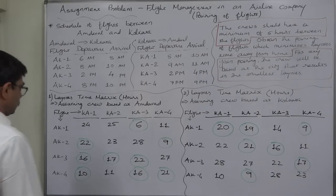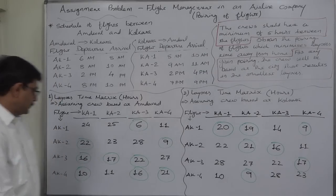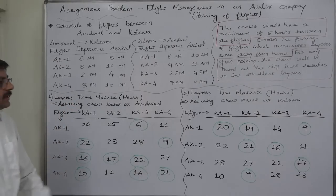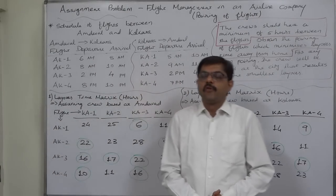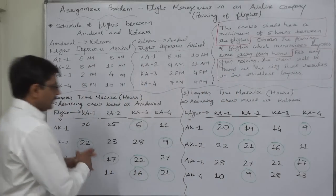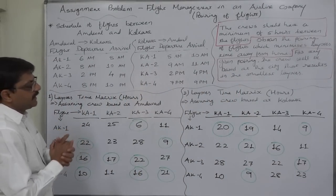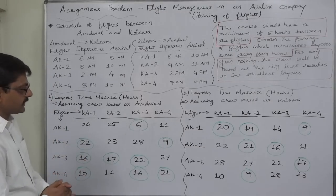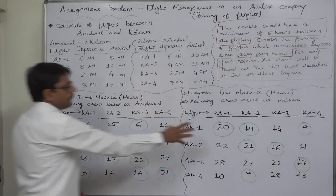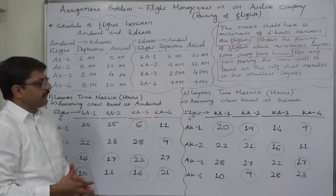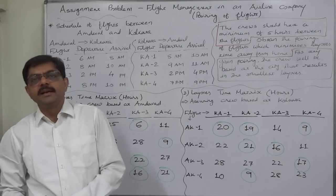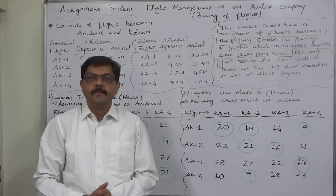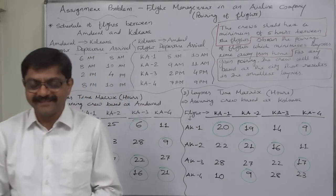Now the next stage will be formulating the assignment problem. We can prepare an assignment table showing the formulation of the assignment problem, selecting these minimum times. That will be covered in the next lecture — formulation and solving of the assignment problem. Thank you very much.